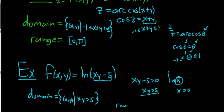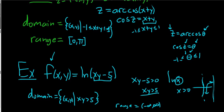The range would be all real numbers. If you're familiar with the graph of logs, it could be anything — negative infinity to infinity. Looking at ln(x) in one variable, the range is all possible y values. I hope this video has been helpful and has helped you learn how to find the domain and range of various multivariable functions.